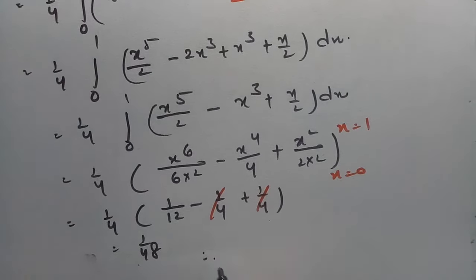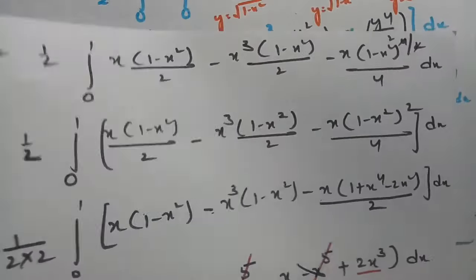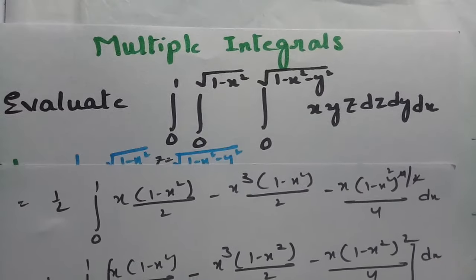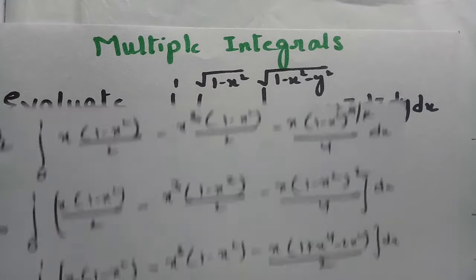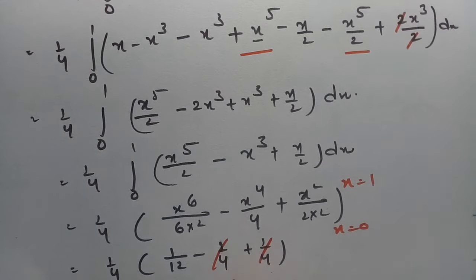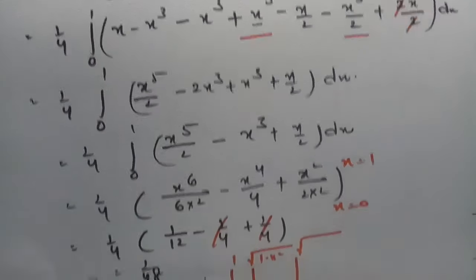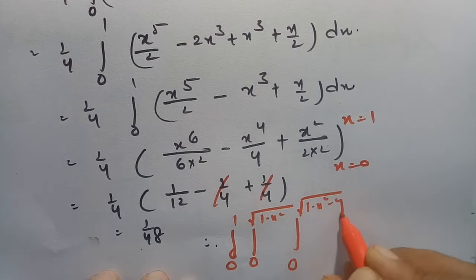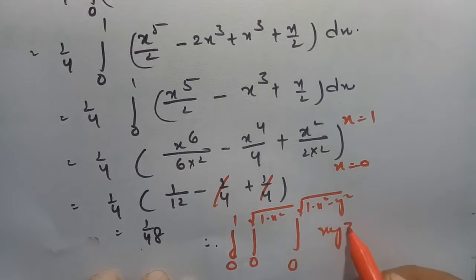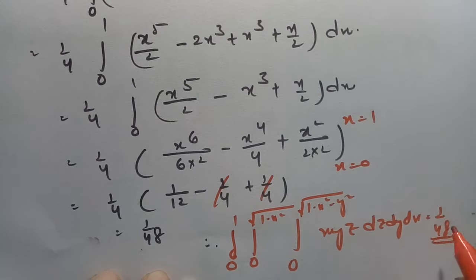Therefore our triple integral — integral from 0 to 1, integral from 0 to √(1−x²), integral from 0 to √(1−x²−y²) of xyz dz dy dx — has the value 1/48.